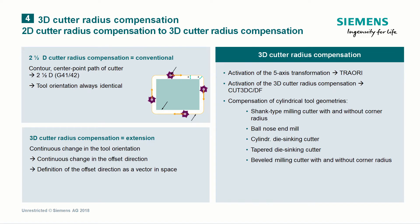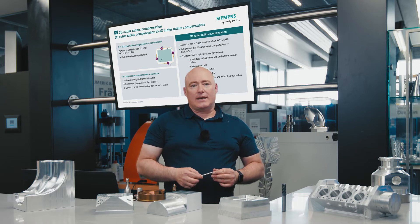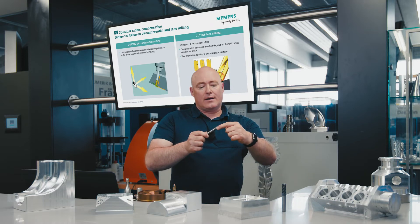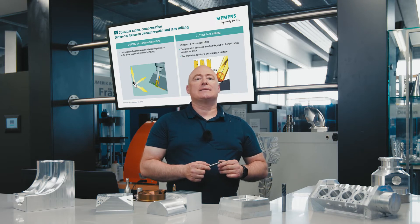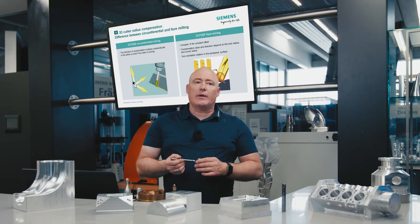This is implemented as follows. First, the 5-axis transformation is activated with the TRAORI command. Then 3D cutter radius compensation is activated with the commands CUT3DC and CUT3DF. Compensation is effected in the circumference of the milling tool with CUT3DC; the direction of compensation is always perpendicular to the plane on which the cutter is moving. For face milling, we use the command CUT3DF, which is more complex because the cutter has to be constantly compensated and recalculated at each individual point of its radius, resulting in a continuous offset. The tool orientation is relative to the workpiece surface.